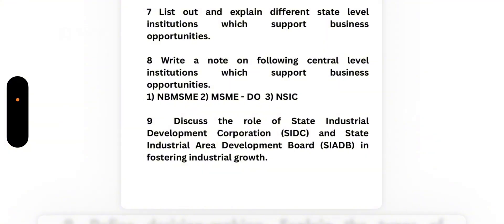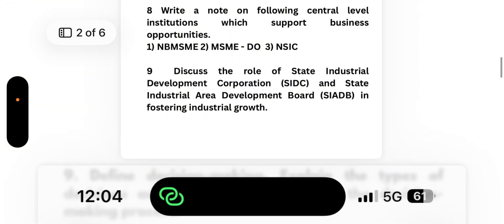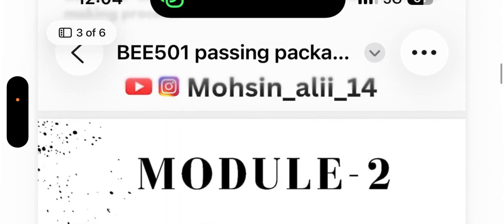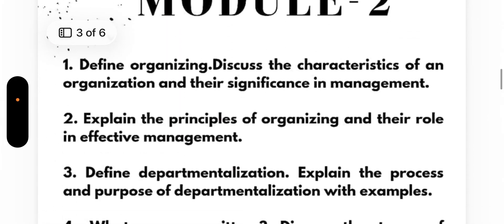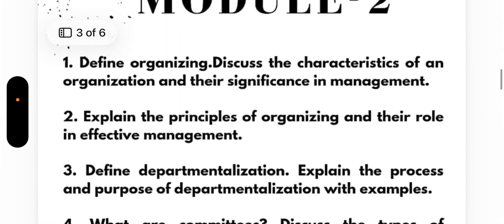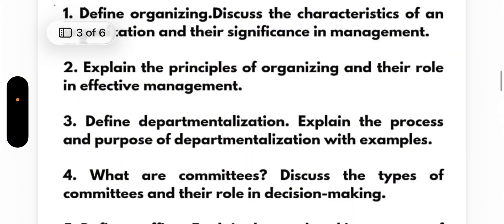Now coming to Module 2, again a passing module. Define organizing, discuss the characteristics of an organization and their significance in management. Explain the principles of organizing and their role in effective management. Define departmentalization, explain the process and purpose of departmentalization with examples.